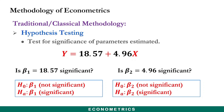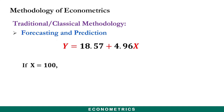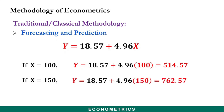Once the significance of the parameters is established, you use the model for forecasting and prediction. For example, if income is 100, substituting into the econometric model gives consumption of 514.57. If income is 150, the answer is 762.57. So, given a certain level of income, you can predict or forecast the level of consumption based on the estimated econometric model.